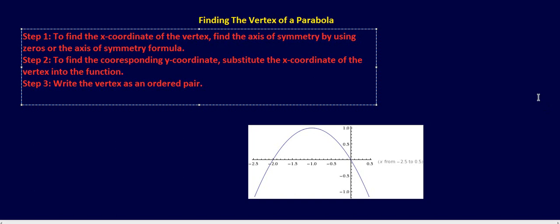Later on, you have to find the minimal and maximum value of a quadratic. If you can find your vertex, you've found your minimum or maximum value. So step one here, we're going to find the coordinate of the vertex. We're going to do two examples.